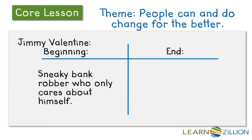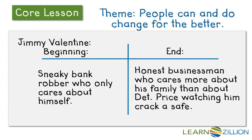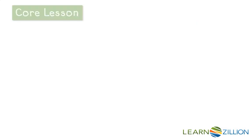Is there evidence to prove that the lesson is that people can and do change? In the beginning, he was a sneaky bank robber who only cares about himself. By the end, he was an honest businessman who cares more about his family than about Detective Price watching him. He knows Ben Price is watching, and he chooses to save his family. So we see that in the beginning he's very selfish; in the end, his family is the most important thing. This provides me with that evidence.